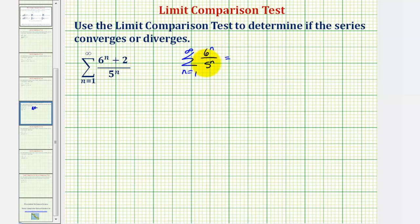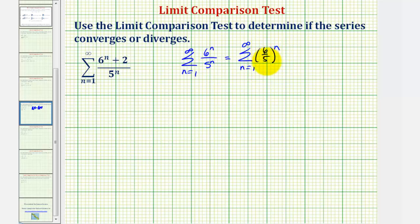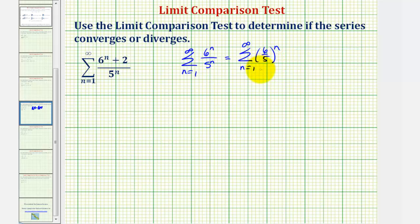We could rewrite this — notice both the numerator and denominator are being raised to the nth power. So we could write this as the summation from n equals one to infinity of six-fifths raised to the power of n. Notice as n increases by one each time, we multiply by another factor of six-fifths. So this is a geometric series where the common ratio r is equal to six-fifths, which is greater than or equal to one, and therefore this is a geometric series that diverges.